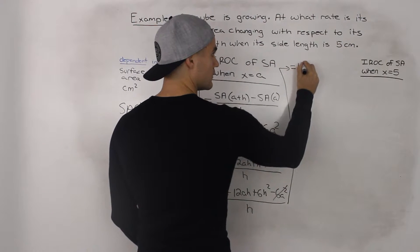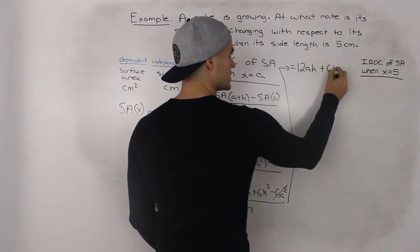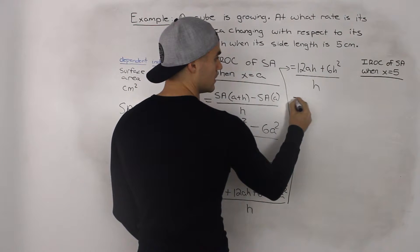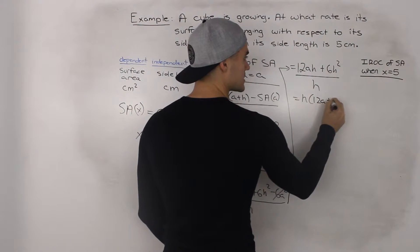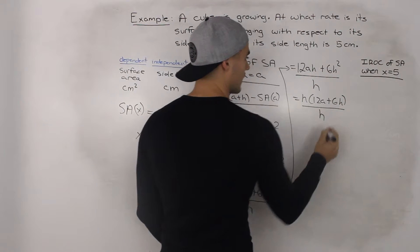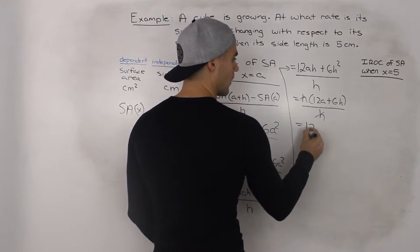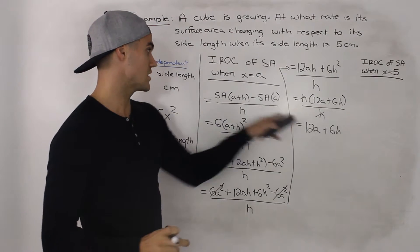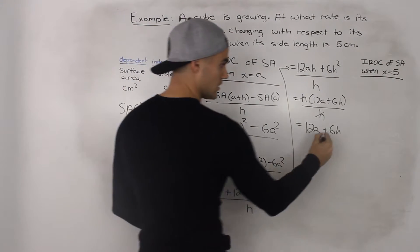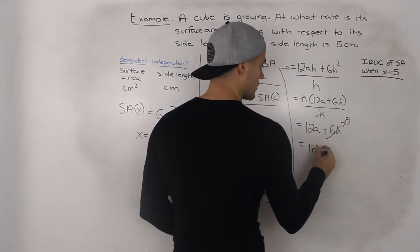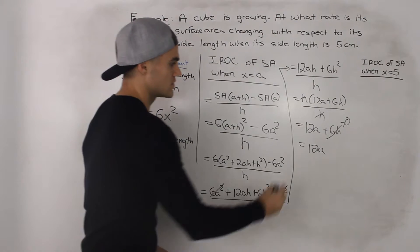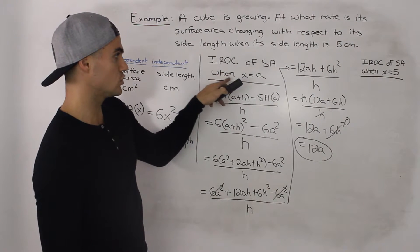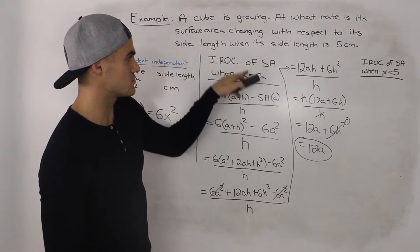We're left with 12ah plus 6h squared, all over h. The goal is to get rid of the h in the denominator, so we factor out h from the numerator to get h times (12a plus 6h), all over h. The h's cancel and we're left with 12a plus 6h. The instantaneous rate of change happens when h is approaching 0, so the 6h term goes to 0 and we're left with 12a. This 12a represents the instantaneous rate of change of the surface area when the side length equals some general value a.